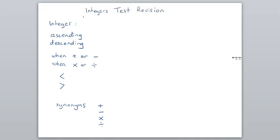This is a short video to help you get ready for the integers test. The test is about integers, so first of all, what is an integer? Well, an integer is a counting number. These are whole numbers, they could be positive or negative, but also include zero. So I'm going to put in, includes zero.